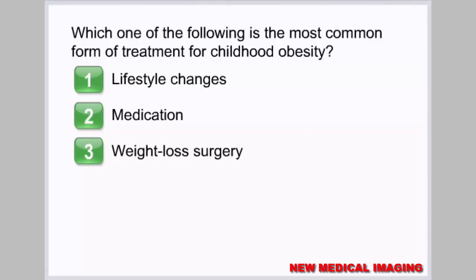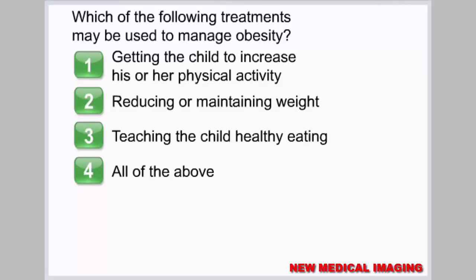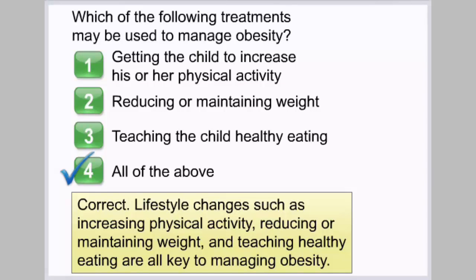Which one of the following is the most common form of treatment for childhood obesity? 1. Lifestyle changes. 2. Medication. 3. Weight loss surgery. Correct. Lifestyle changes such as increasing physical activity, reducing or maintaining weight, and teaching healthy eating are all key to managing obesity.